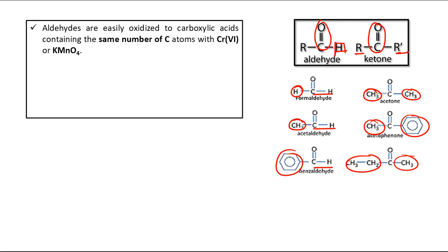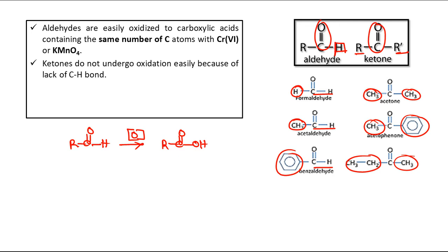For aldehydes, it is observed that treatment with a chromium(VI) oxidation state reagent or KMnO4 oxidizes them to carboxylic acid. The same number of carbon atoms is retained. So writing R-CHO in the presence of a Cr(VI) reagent or KMnO4, it is converted to R-COOH, with the carbon count remaining the same. But when it is a ketone, this type of oxidation does not occur very easily.